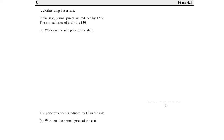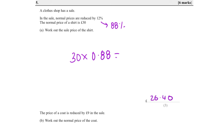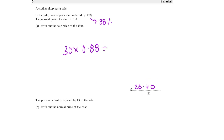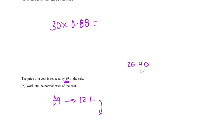Question five: A clothes shop has a sale where normal prices are reduced by 12%. The normal price of a shirt is £30. Work out the sale price. Reduced by 12% means 100 − 12 = 88%, so 30 × 0.88 = £26.40. The price of a coat is reduced by £9 in the sale, and £9 is equivalent to 12%. Find 100%: 9 ÷ 12 × 100 = £75. The original price of the coat is £75.